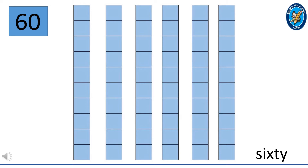This is 60. 6 and 0 make 60. The number name is on the right at the bottom — S-I-X-T-Y. 60 is made up of 6 ten-squared blocks. So 6 ten-squared blocks make 60: 1, 2, 3, 4, 5, 6. 6 ten-squared blocks are 60.